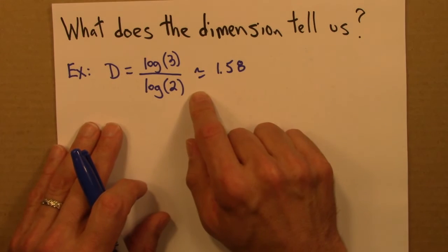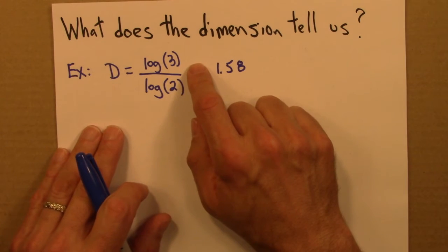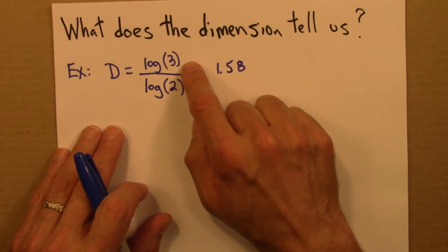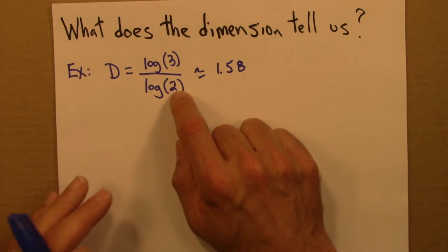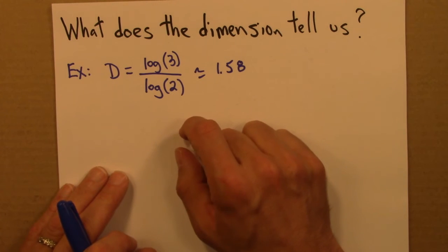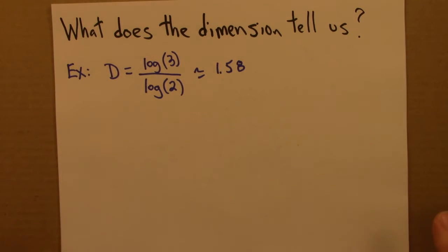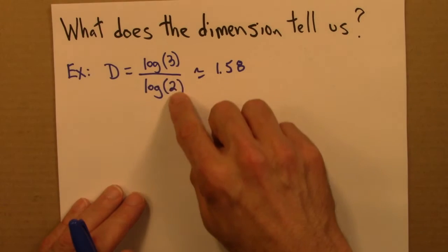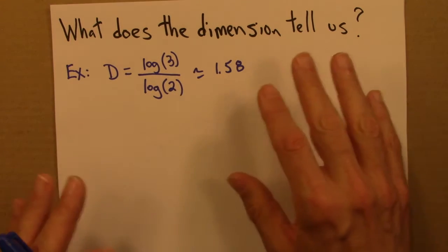Well, thinking about the self-similarity dimension, this would tell us that we would expect the shape to be made up of three small parts, each of which was half the size of the big part. And each of those three small parts itself would be made up of three smaller parts, which were half the size of that small part, and so on and so on. We don't know what those parts look like. We can't figure that out from the dimension. But we do know that we expect to see this 3 to 2 as we scale in and out.